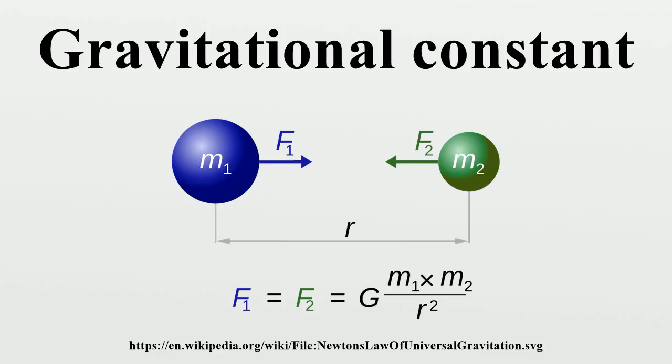The dimensions assigned to the gravitational constant in the equation above—length cubed divided by mass and by time squared—are those needed to balance the units of measurements in gravitational equations.